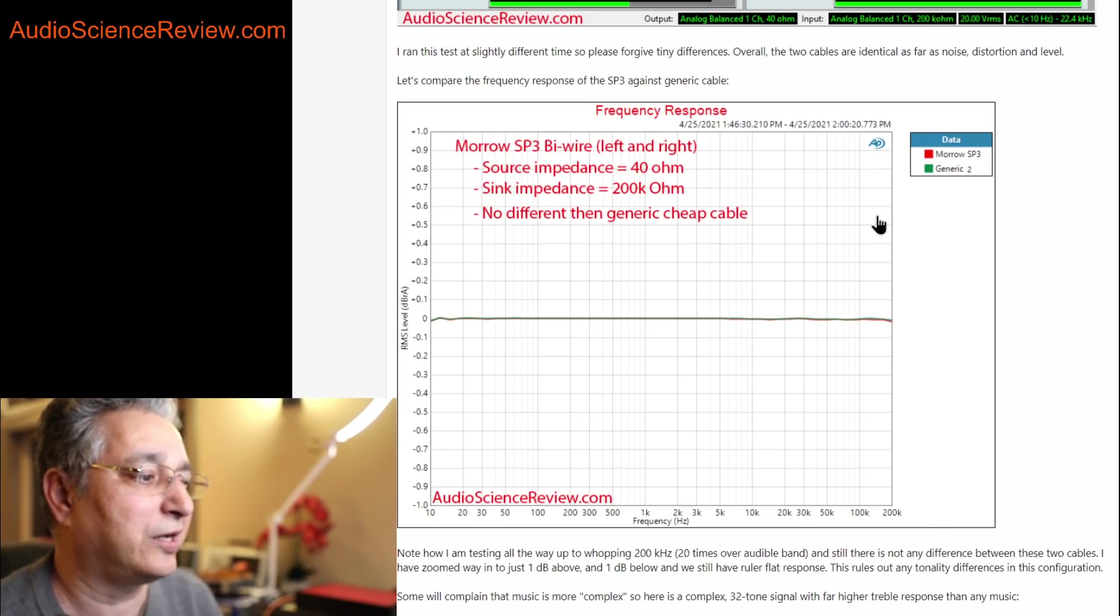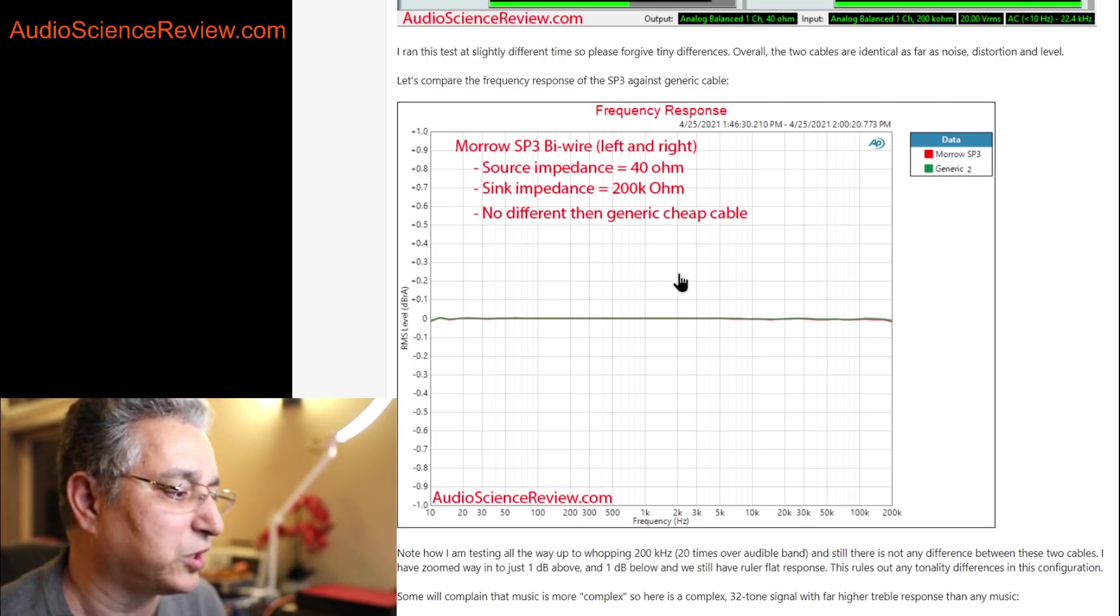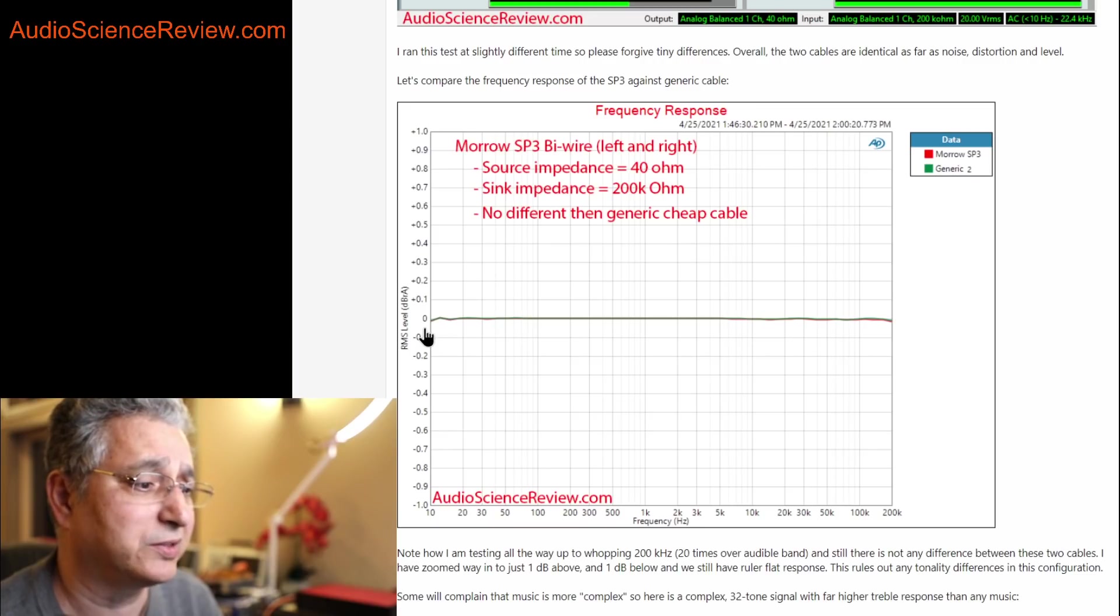And you still can't see any variation to 200 kilohertz between the Morrow Audio SP3 cable and my generic crusty $5 cable. But again, this is treating it like an interconnect, and there may be some effects when the impedance has changed. But here, by the way, we're sweeping at all frequencies from 10 hertz all the way up to 200 kilohertz, so it's not one tone. And we're measuring all frequencies, we're measuring ultrasonic frequencies. What this tells us is that the tonality can't change, because tonality is determined by frequency response, and that's not changing.